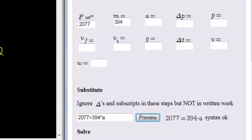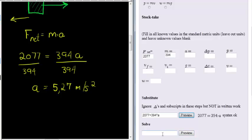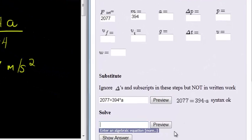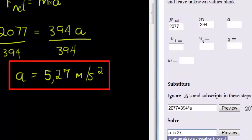And then all I needed to do was to solve for a. So assuming that the steps in between have been done, we find that a is equal to 5.27 meters per second squared.